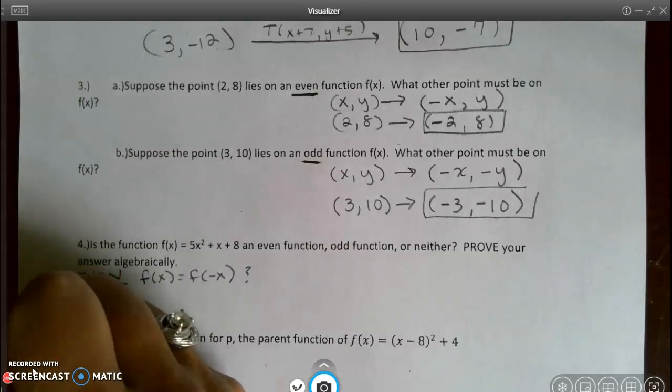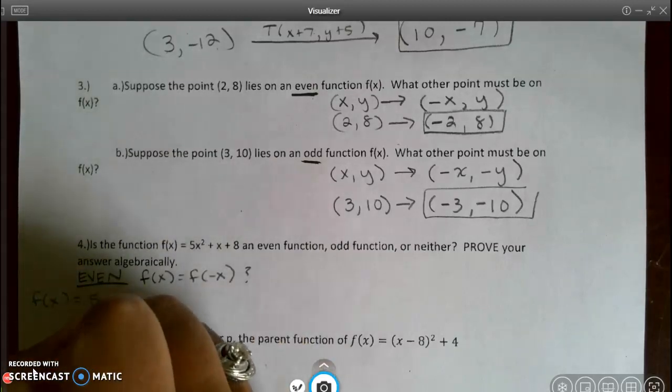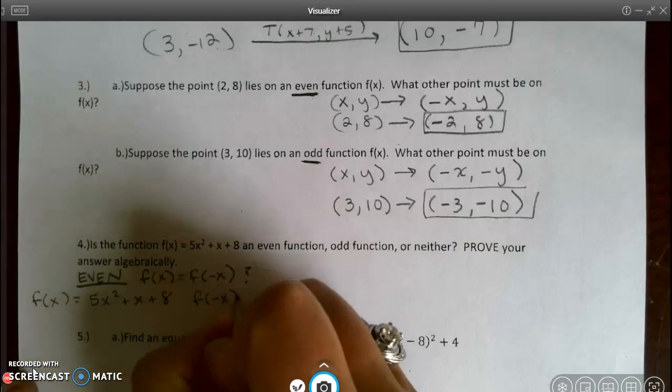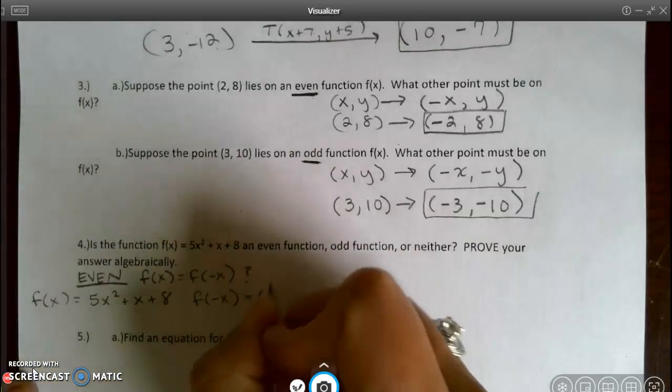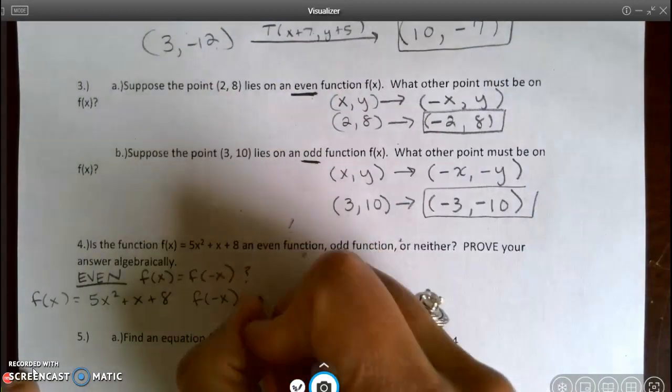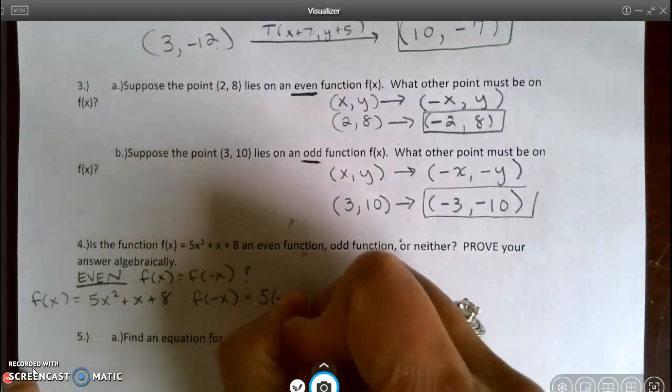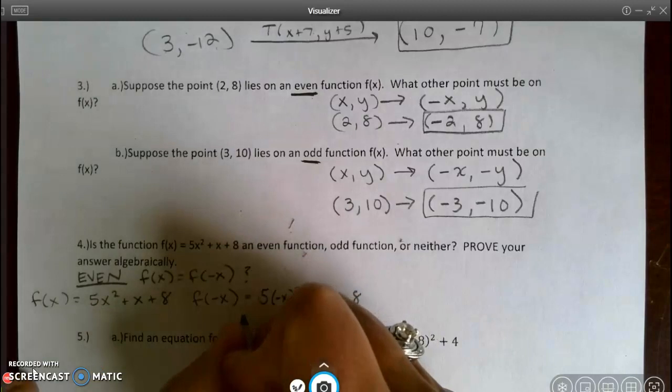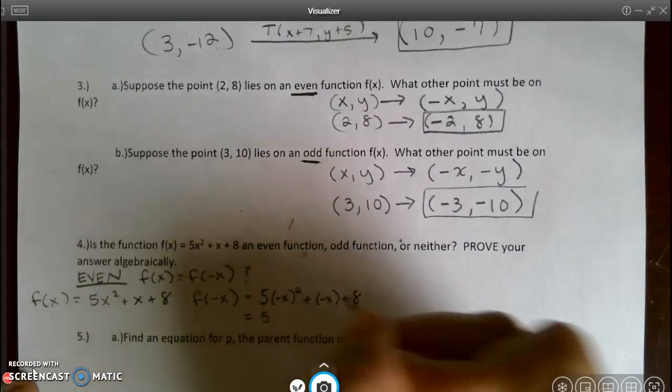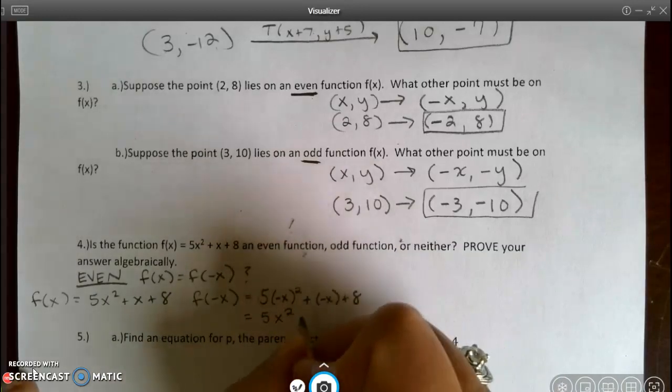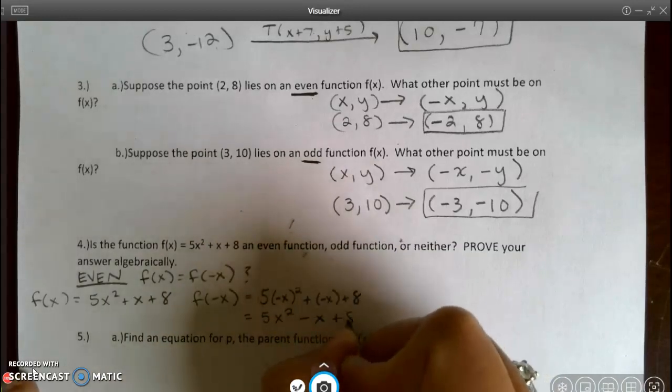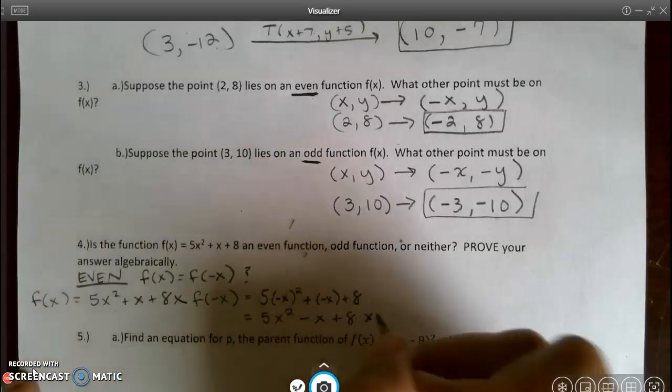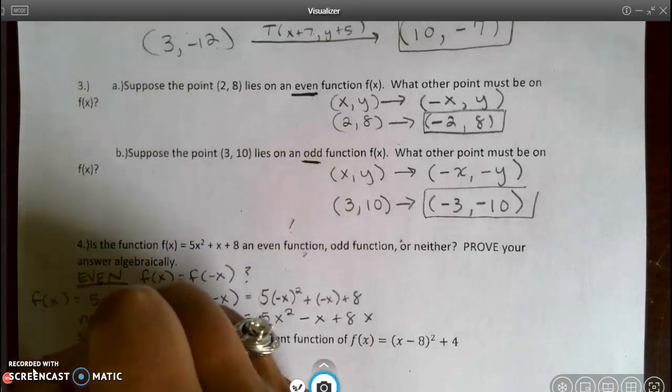So f(x), I have to do the left side, is 5x squared plus x plus 8. That negative x is going to be 5 times negative x squared plus negative x plus 8, which gives me 5x squared, when I square a negative it just becomes positive, plus a negative becomes minus x, and I have plus 8. These are not the same, so it's not even.